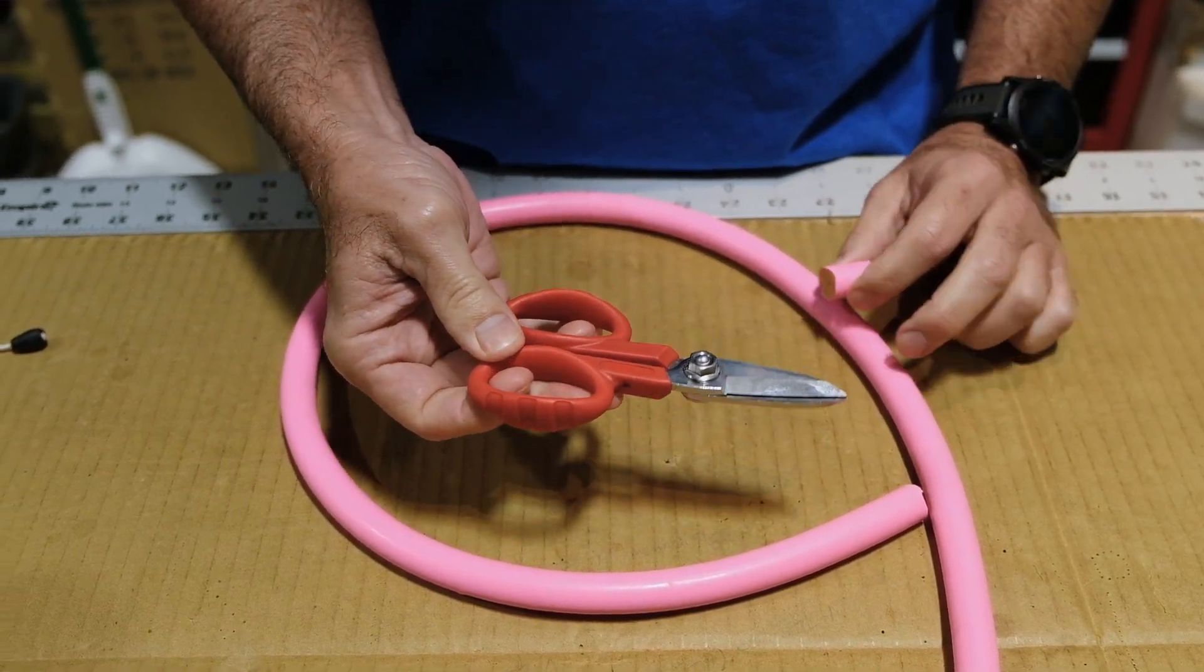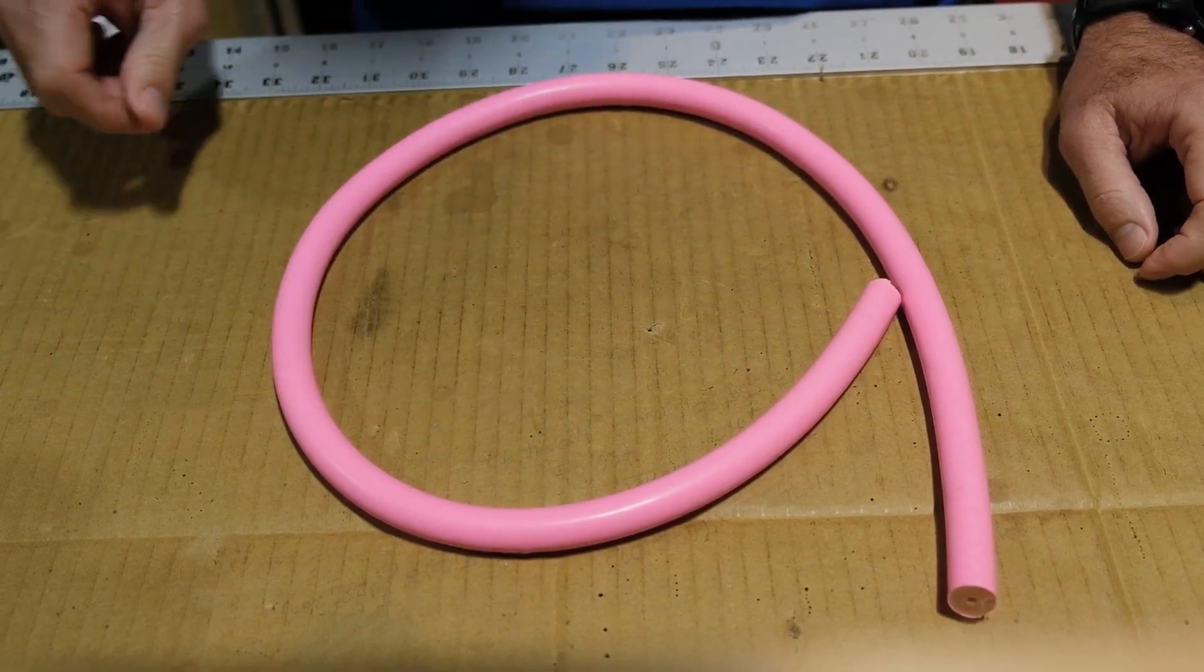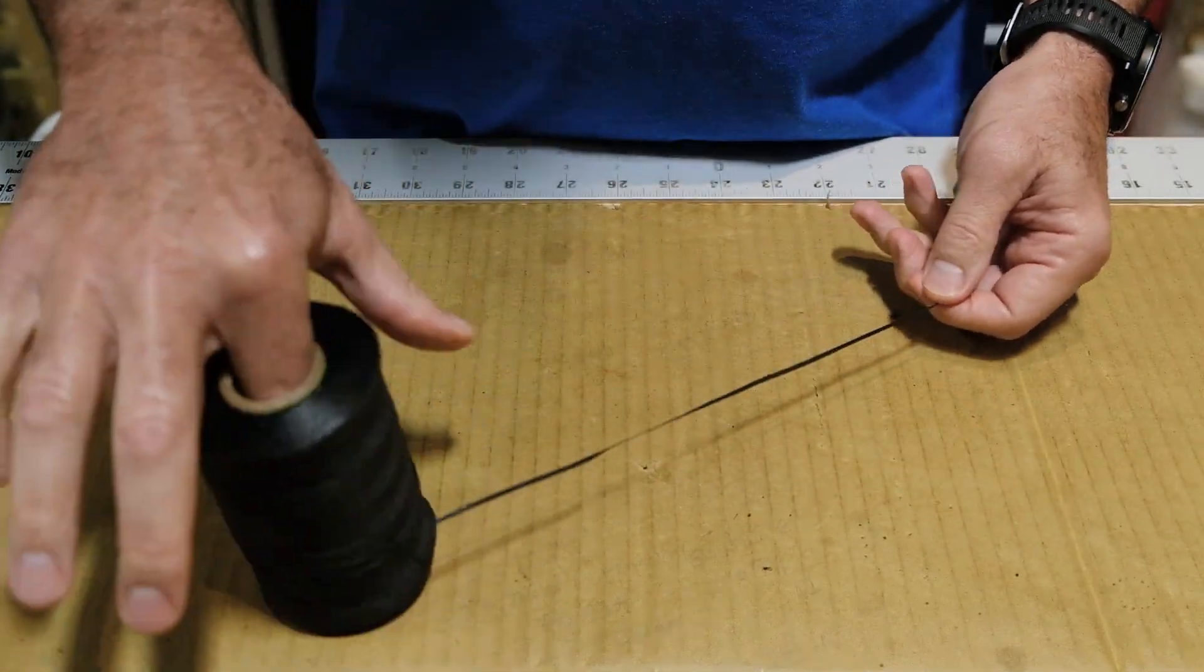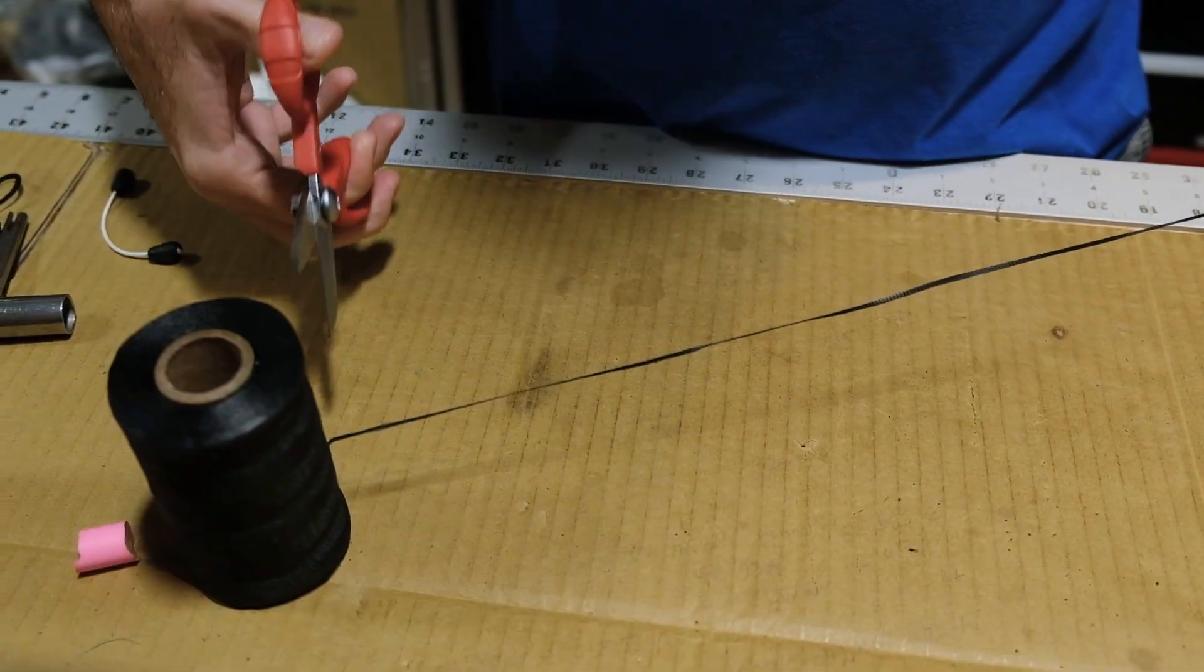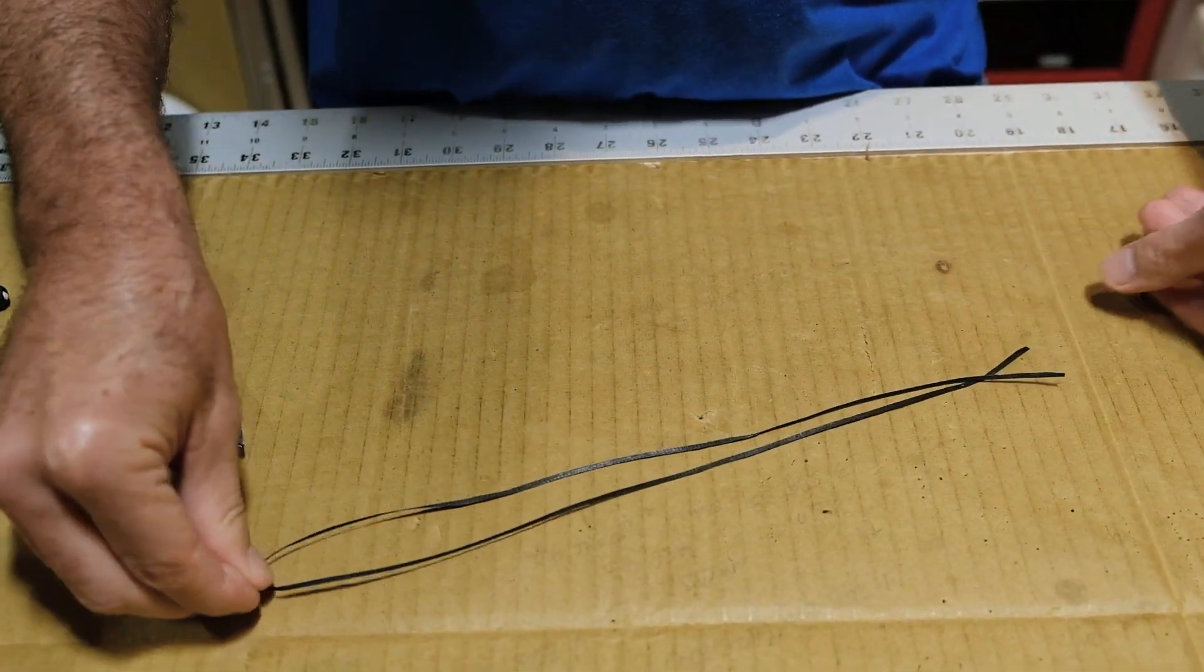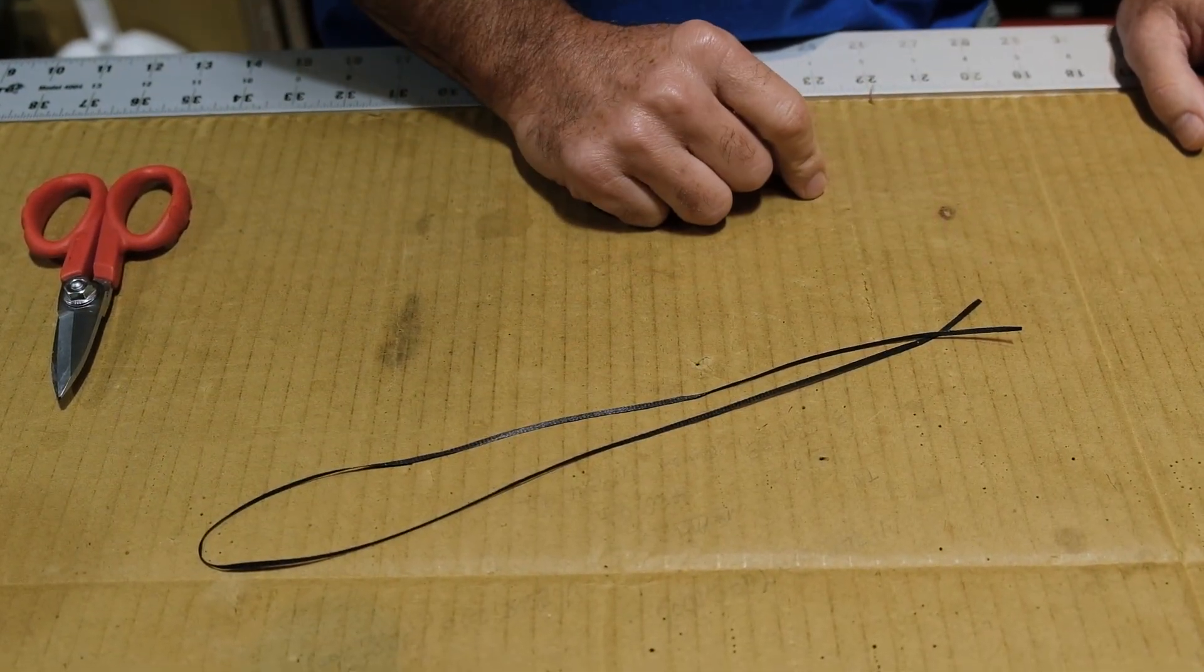So get yourself some good scissors. We like these short stubby nose ones. So step one, get your speargun rubber cut to the length you want. Step two, you'll want to cut a good amount of your wax tie line. Then what we like to do is double it up. So you have a loop on one side and the open ends on the other.